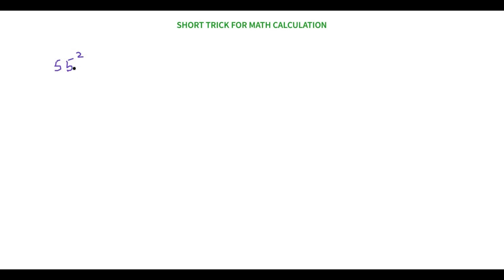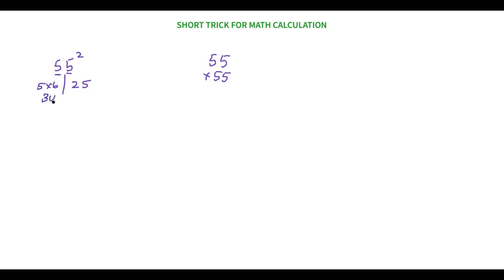Whenever we have a number like 55 square, normally you'd multiply 55 times 55 and it would take at least five minutes. With this trick you'll find the answer within seconds. First, take the ones place — that's five — and find five square, which is 25. Then take the tens digit, which is five, and multiply it by the consecutive number, six. So five times six is 30. Joining the numbers gives us 3025.